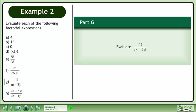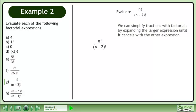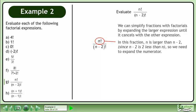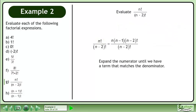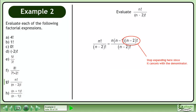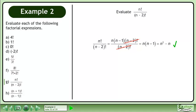In Part G, evaluate n factorial over n-2 factorial. We can simplify fractions with factorials by expanding the larger expression until it cancels with the other expression. In this fraction, n is larger than n-2 since n-2 is 2 less than n, so we need to expand the numerator. Expand the numerator until we have a term that matches the denominator, and stop expanding where it cancels with the denominator. Cancel to get n times n-1. Multiply to get the answer.